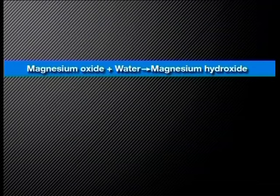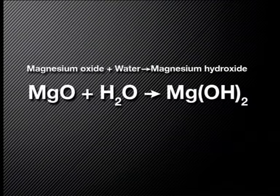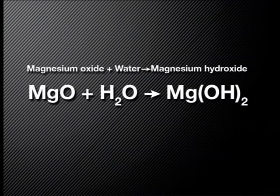Now we are ready to write the chemical equation for this reaction. The word equation reads: magnesium oxide and water reacts to form magnesium hydroxide. The next step is to convert the word equation into a chemical equation, making sure you write down the correct formula for each substance. Magnesium oxide is MgO, water is H₂O, and magnesium hydroxide has a formula of Mg(OH)₂. So the chemical equation is: MgO + H₂O → Mg(OH)₂.